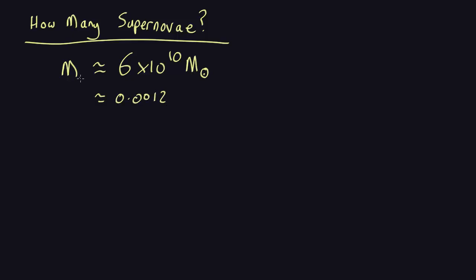So, that's the mass of everything. The mass of iron is going to be about this times 6 by 10 to the 10 solar masses, which comes out as about 7 by 10 to the 8 solar masses of iron. So, that's how much we have to make in our own Milky Way galaxy.